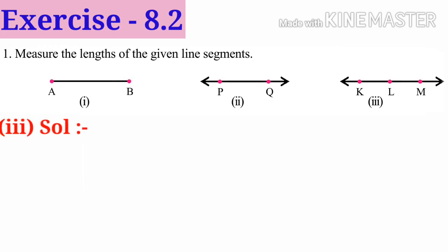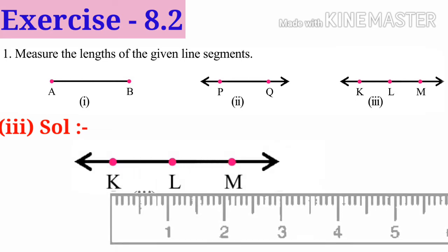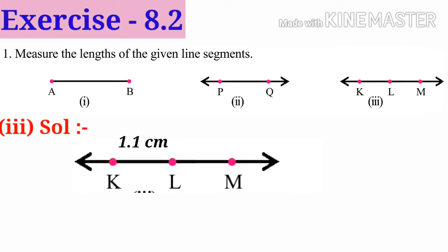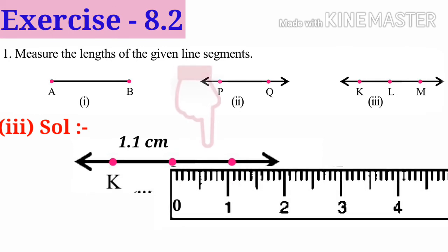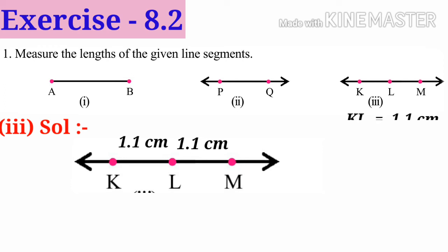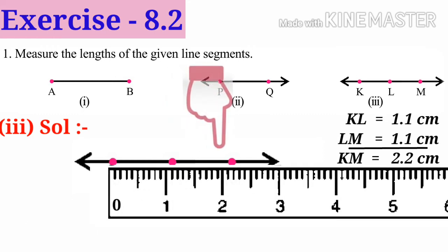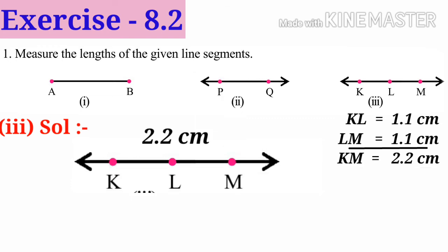Now solution 3. KLM line segment. Put 0 at point K and count the number of millimeters after 1. It is only 1, so 1.1 centimeters. Again put the scale 0 at point L and count the number of millimeters after 1. It is also only 1, so LM is 1.1 centimeters. Now write KL equals 1.1 centimeters, LM equals 1.1 centimeters. By adding we get KM equals 2.2 centimeters. Let us find using scale. Count the number of millimeters after 2. It is 2, so 2.2 centimeters. The length of KM is 2.2 centimeters.